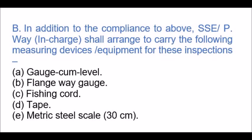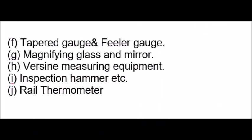In addition to the above, SSE P-Way in-charge shall arrange to carry the following measuring devices and equipment for these inspections: gauge cum level, flangeway gauge, fishing cord, tape, metric steel scale 30 cm, tapered gauge and feeler gauge, magnifying glass and mirror, versine measuring equipment, inspection hammer, and rail thermometer.